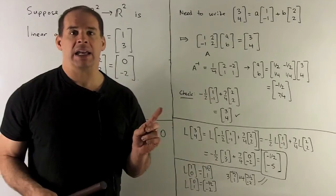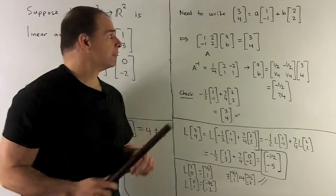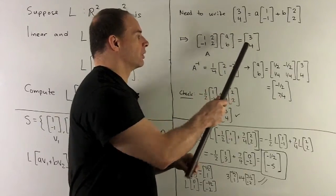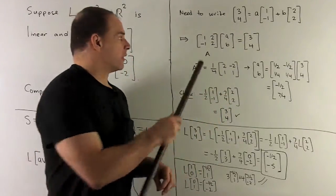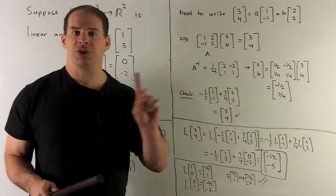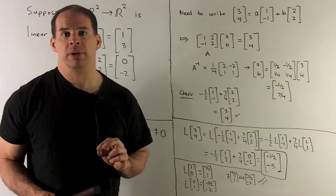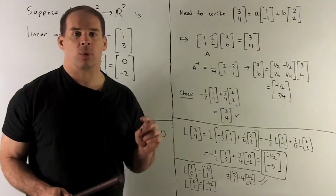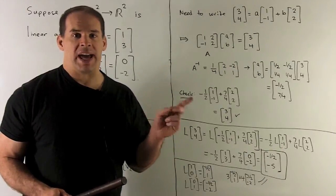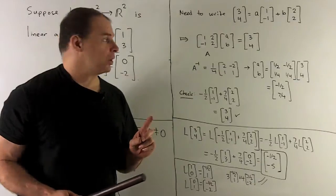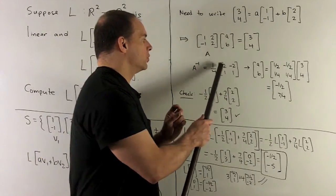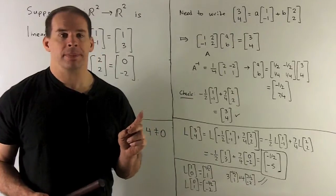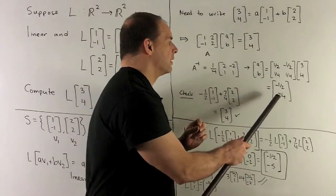We recombine and get a matrix-vector equation: the matrix with columns (1, 2) and (−1, 2), times unknowns (A, B), equals (3, 4). I call this matrix A, and push it to the other side as A inverse. Since the determinant is 4, the inverse is one-fourth times the matrix with diagonal flipped and off-diagonal negated: (1/4)·[[2, 1], [−2, 1]]. Solving for A and B, I get A = −1/2, B = 7/4.